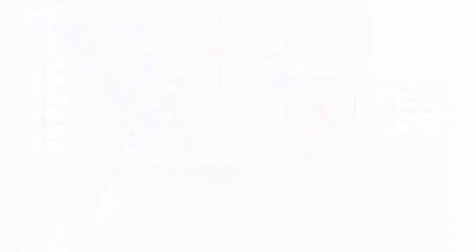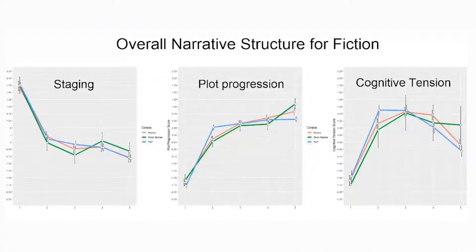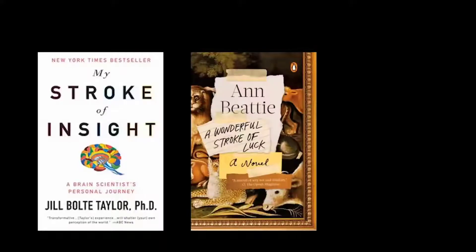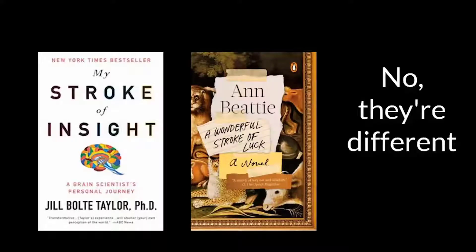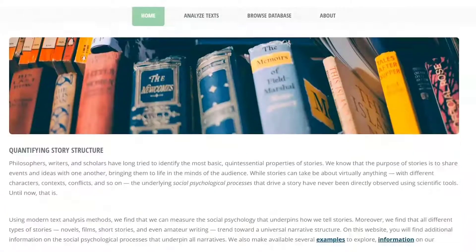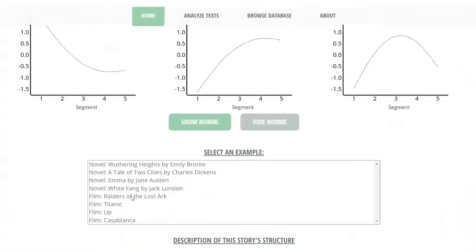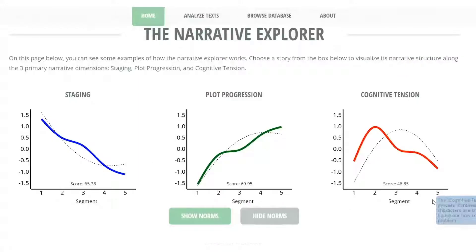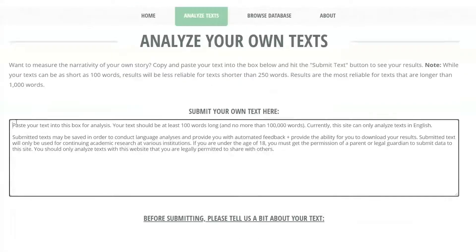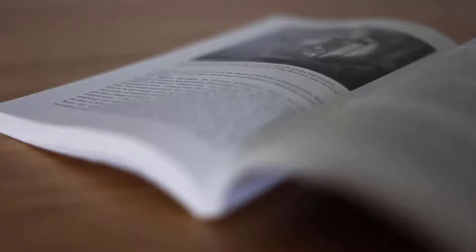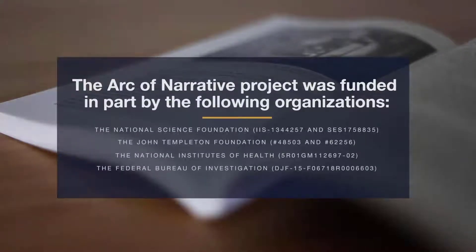That there is a measurable and visible underlying structure to stories raises dozens of questions. For example, do good stories have a different structure from bad ones? Do other works such as non-fiction show the same narrative patterns? To learn more, check out our paper along with the supplemental information. We've developed a website where you can look at the arcs of hundreds of published books and movie scripts, with the option of uploading your own text samples. We are at the threshold of a new world that can help us understand the very nature of language, stories, and communication.